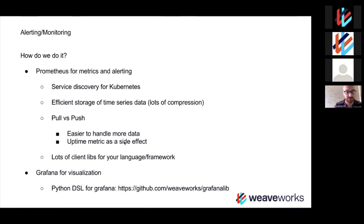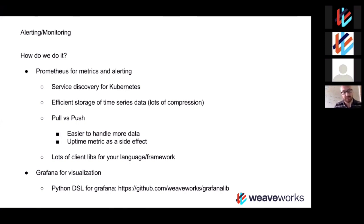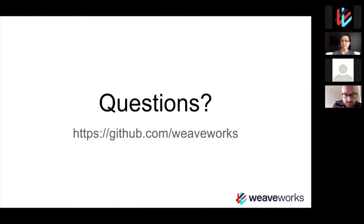Prometheus has many client libraries for whatever language and framework you're using — Go, Node.js, C#, and more — all open source. We also use Grafana for visualization — it's a nice UI for graphs. We built a Python library, a Python DSL for editing Grafana JSON, to help build those charts and graphs more easily. The Python DSL lets you do branching, looping, and all that, and renders JSON that works with Grafana. So if you're using Grafana, check out our Python DSL. That's it for lessons learned from Weaveworks on running Kubernetes.